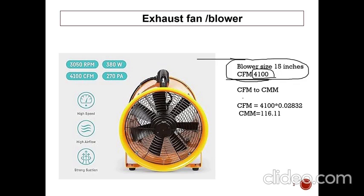To find out how long it will take to ventilate, we need to convert CFM to CMM. The CFM of the blower as given by the manufacturer is 4100. Since 1 CFM equals 0.02832 CMM, if we multiply 4100 by 0.02832, the answer is 116.11.